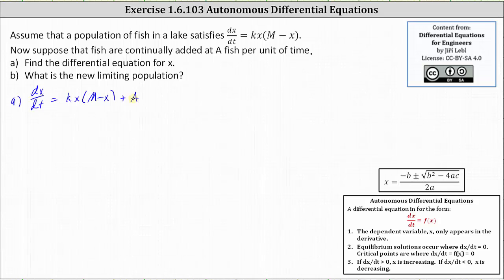For part b, to determine the new limiting population, because it will no longer be m, we need to find the equilibrium solution by setting dx/dt equal to zero and solving for x, which gives us the equation zero equals, let's distribute the kx, which gives us kmx minus kx squared plus a. Now we need to solve for x. We'll have to use the quadratic formula. Let's write the terms on the right in descending order, and we often prefer the coefficient of x squared to be positive. Let's also multiply both sides by negative one. This gives us zero equals positive kx squared minus kmx minus a.